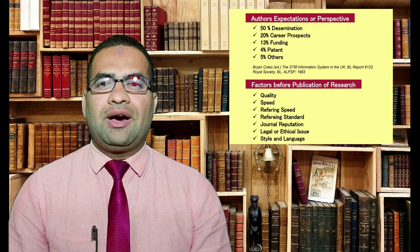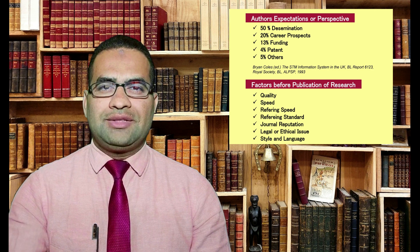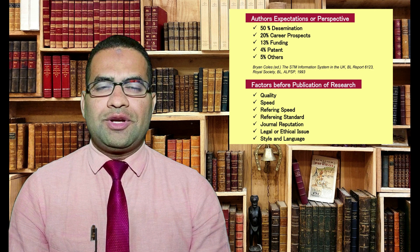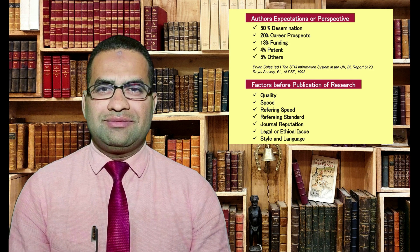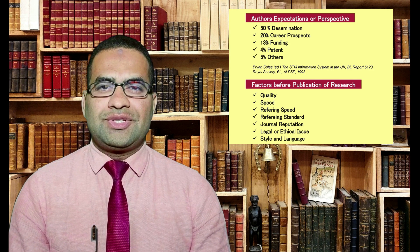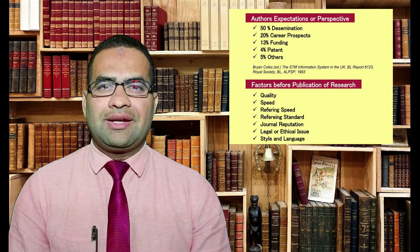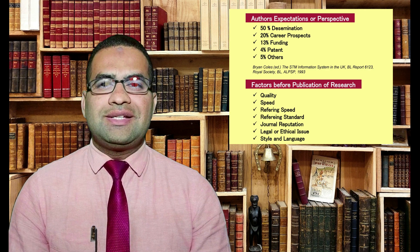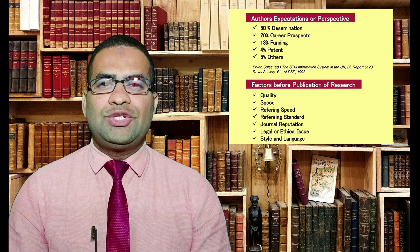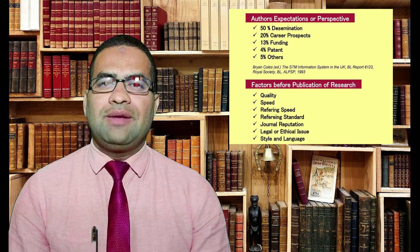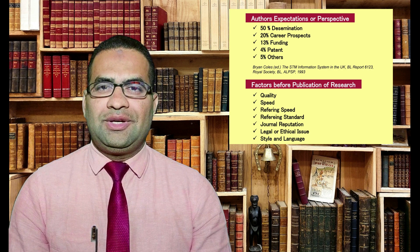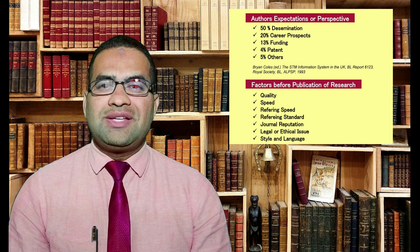Now let us consider the factors which are important before going for publication. There are some factors considered very important, like quality and refereeing speed, followed by the refereeing standard and journal reputation. Also, editorial policy, physical quality, and publication services have a major role.